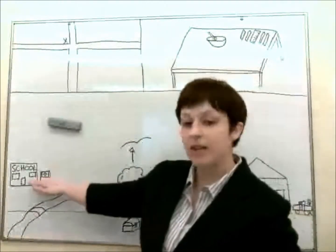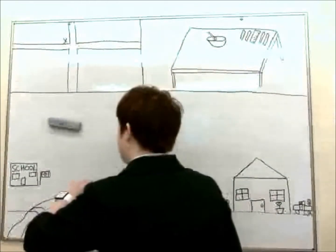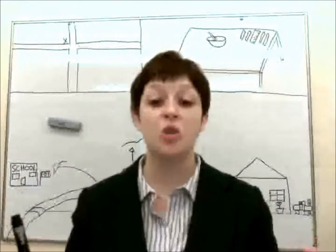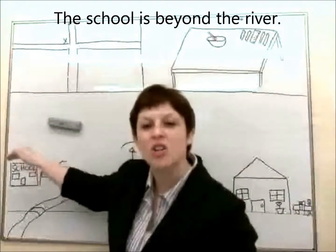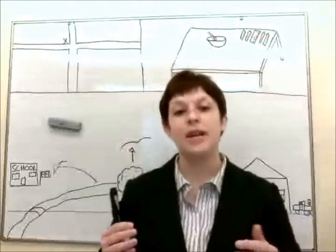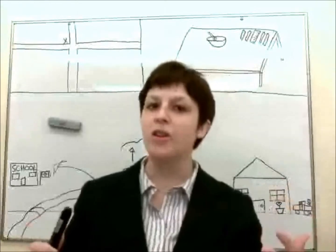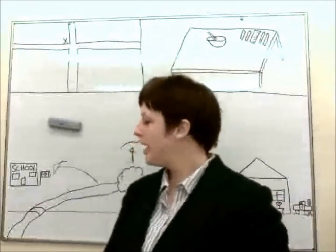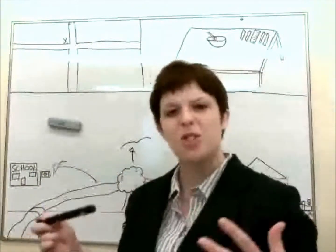Now, if you look here in the distance, there is a school. And in relation to the river, where is the school? We can say that the school is beyond the river. This might be a new one for you — beyond simply means past or further than. So if you have maybe a hill or a mountain, think about what is beyond that. Here, the school is beyond the river; it's past that particular thing.